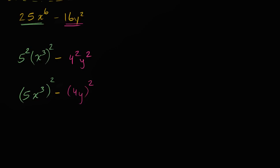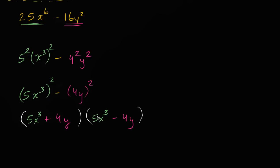When you write it this way, you see this is a difference of squares. We can rewrite it as five x to the third plus four y, times five x to the third minus four y. This comes straight from a squared minus b squared equals a plus b times a minus b, where a is five x to the third and b is four y.